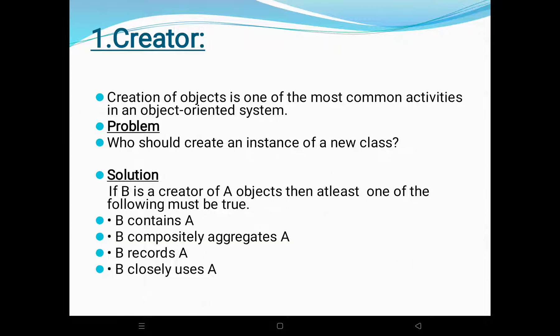What is the problem? Who should create the instance of a new class? This is the problem. What is the solution? If B is the creator of an A object, then at least one of the following conditions must be true: B contains A, B aggregates A, B records A, or B closely uses A.